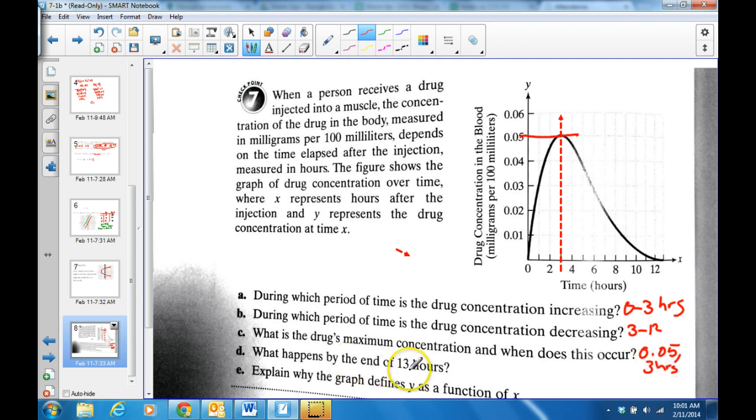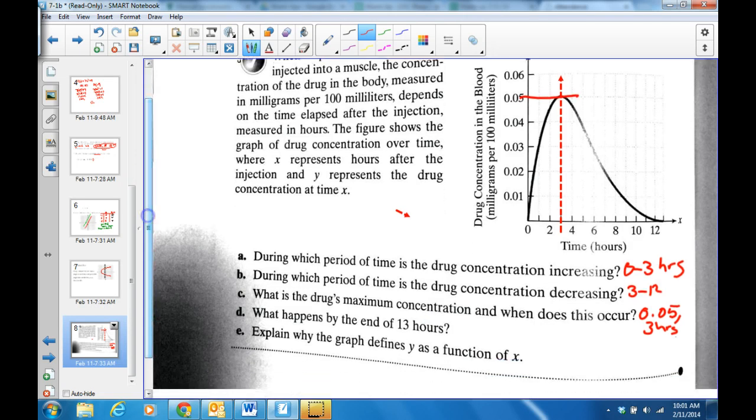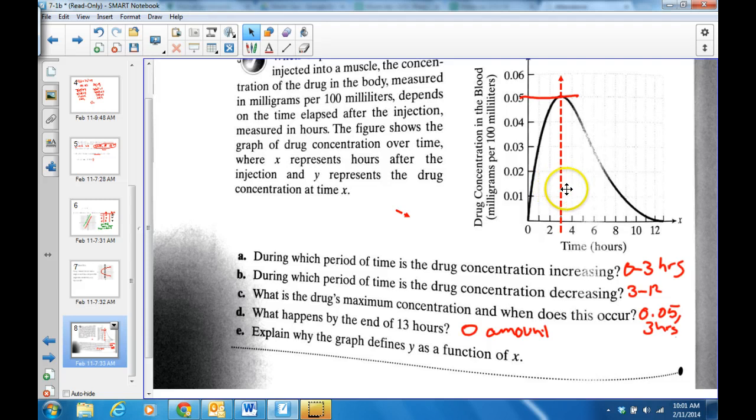What happens at the end of 13 hours? Yeah, it's at zero again. So zero amount of drug. And E, it passes. Yes, it passes the vertical line test. That's why we can tell it's a function. If I'm going to grab my vertical line here, I can move it side to side and notice that it only crosses once.